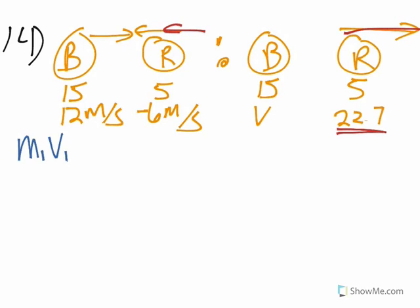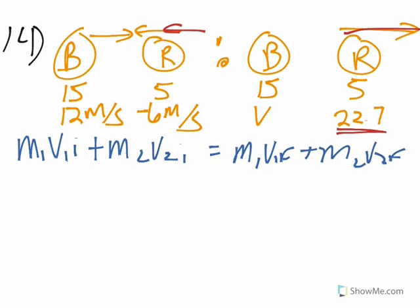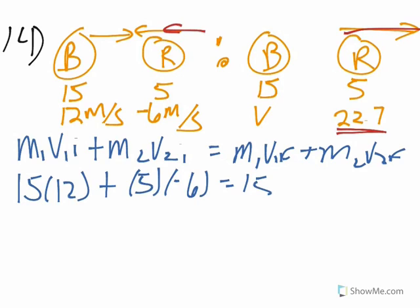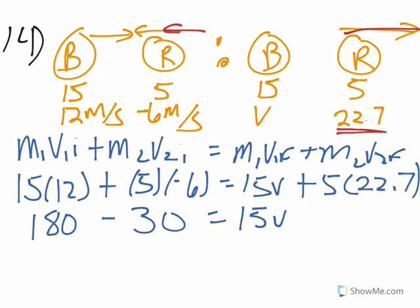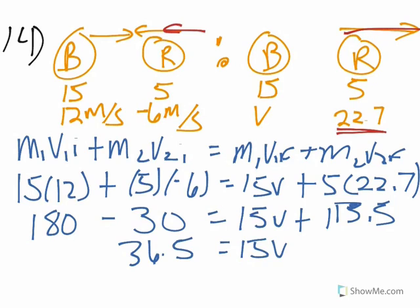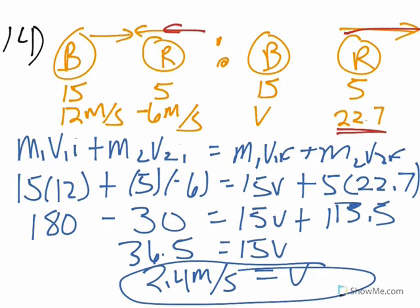We use the elastic collision equation: M1V1i plus M2V2i equals M1V1f plus M2V2f. Plugging in: 15 times 12 plus 5 times negative 6 equals 15V plus 5 times 12.7. That gives 180 minus 30 equals 15V plus 63.5, so 150 minus 63.5 is 86.5, and 86.5 divided by 15 gives approximately 2.4 meters per second for the boat's velocity. Since it's positive, the boat is still moving forward.